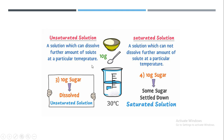In an unsaturated solution, we can add some further amount of solute and dissolve it in the solvent to get a clear solution. For example, when we add 10 grams of sugar in 50 ml of water at 30 degrees centigrade, we get a clear solution. This is an unsaturated solution because when we add another 10 grams of sugar, it also gets dissolved — so now it has 20 grams of sugar dissolved in it.